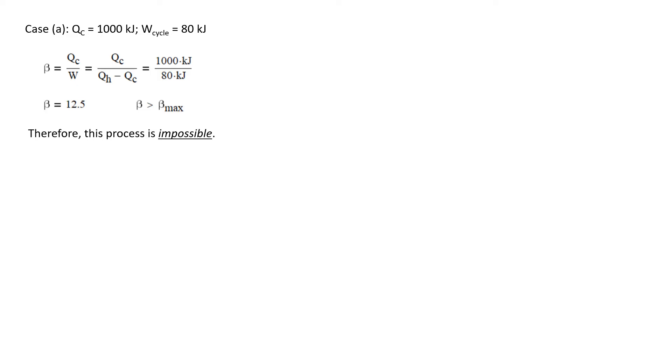Let's evaluate the first case. We're given that QC is 1000 kilojoules and the work for the cycle is 80 kilojoules. The coefficient of performance is QC over W, which is 1000 kilojoules over 80 kilojoules. We get that beta is 12.5. This is greater than the maximum beta allowed, so this process is impossible.